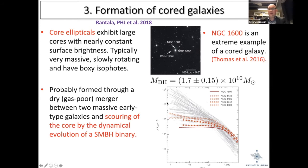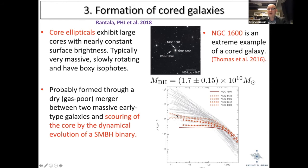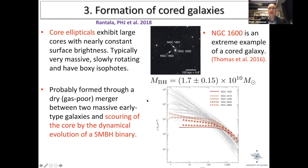A prime example is NGC 1600, which has a black hole mass of roughly 1.7 times 10^10 solar masses. The leading theory for how this forms involves a dry merger — a gas-poor merger between two massive early-type galaxies. The black holes spiral to the center, interact with stars, and eject most of the stellar mass from the center, corresponding roughly to the combined black hole mass. This produces very flat surface brightness profiles.